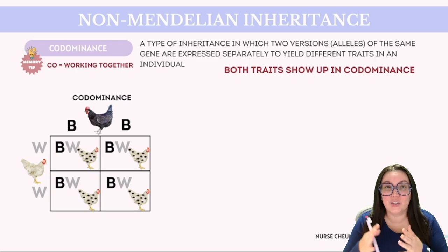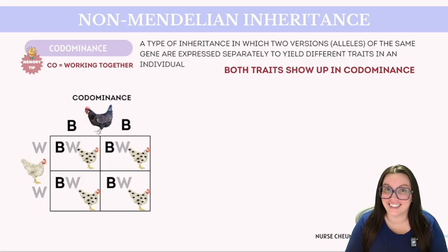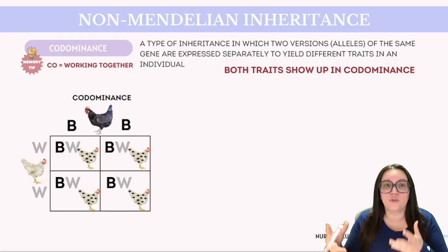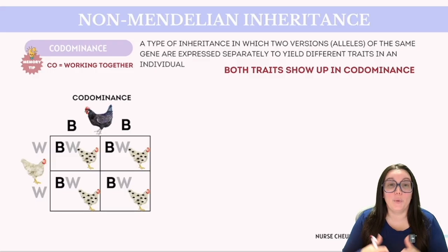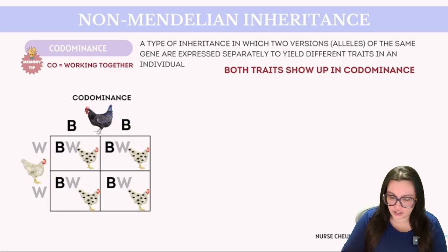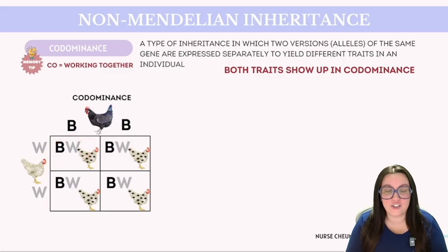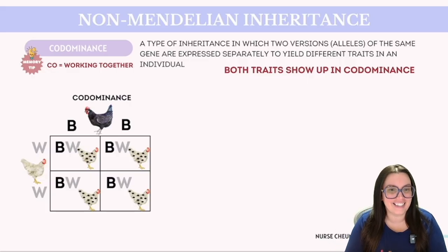Lastly, we have co-dominance. The prefix co- suggests cooperation, aptly describing how alleles interact. Unlike incomplete dominance, co-dominance involves both alleles being expressed equally and independently. To illustrate this, consider the genetic crossing of certain chickens. When a black chicken with genotype capital W capital W is crossed with a white chicken, the resulting offspring exhibit the genotype capital W capital W. These chickens display both black and white feathers in a speckled pattern — a simultaneous expression of both traits without blending or dilution, exemplifying co-dominance where both alleles contribute to the phenotype in a distinctly visible manner.